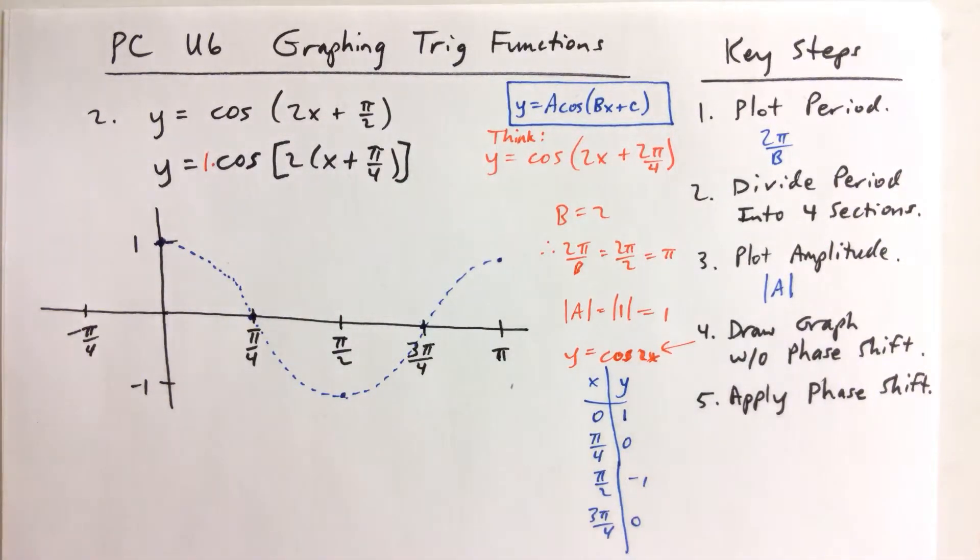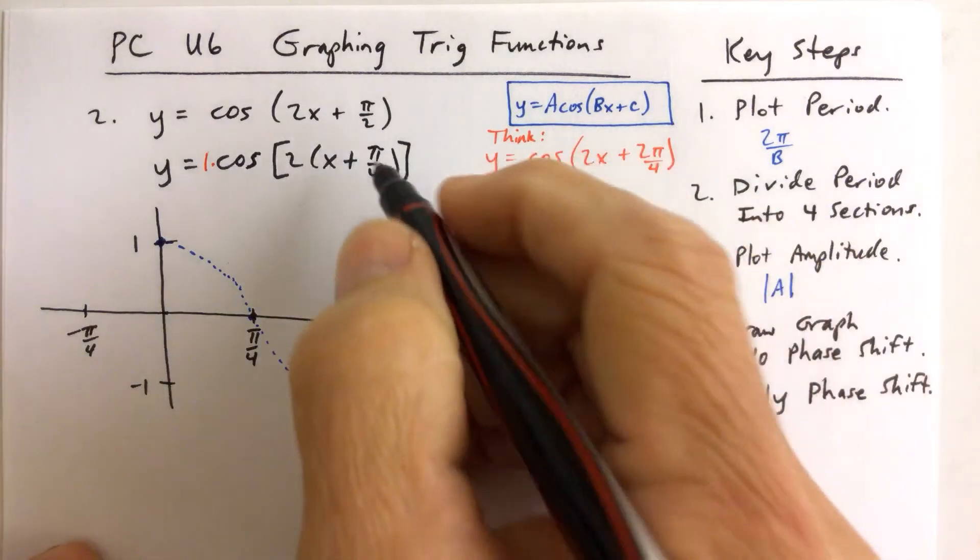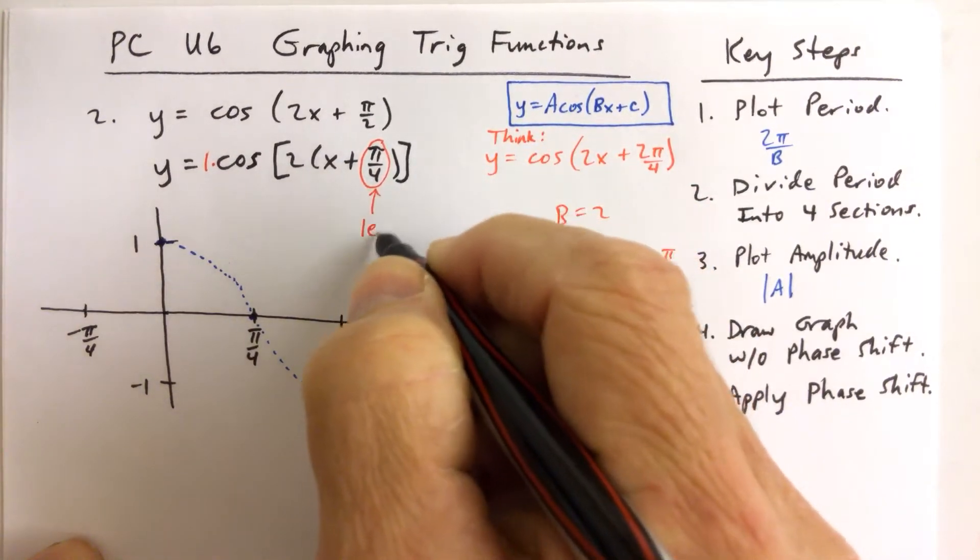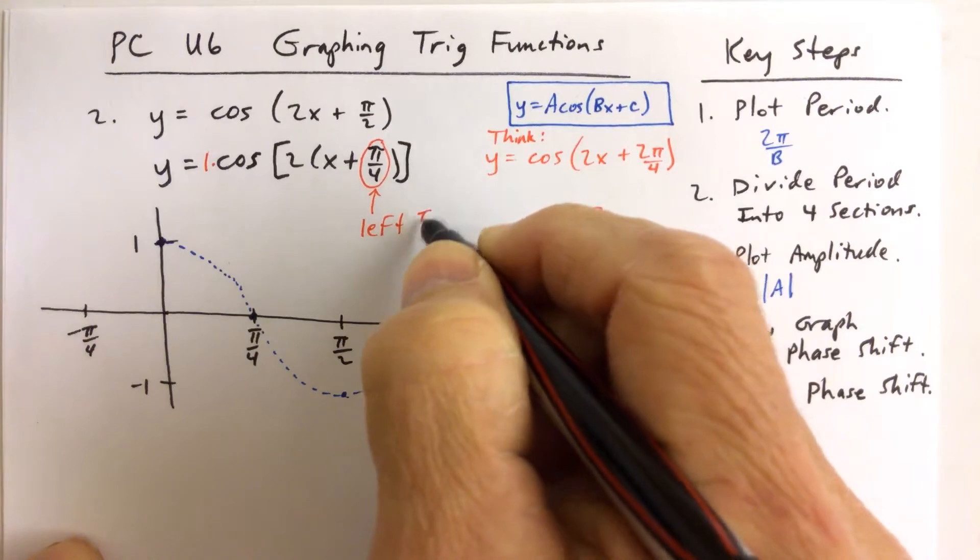So then we can go on and on with that. Now we want to apply the phase shift, and the phase shift is that value right there tells us we're going to go left pi over 4 radians.